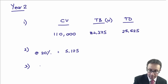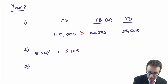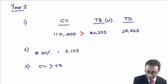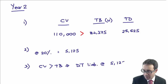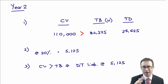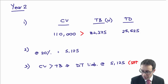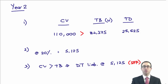Step three: the carrying value is still greater than the tax base, so we have a deferred tax liability of $5,125. That is the figure that appears on the statement of financial position.